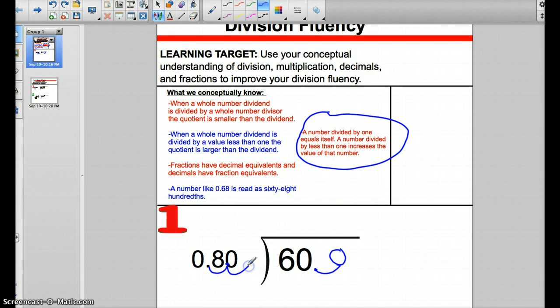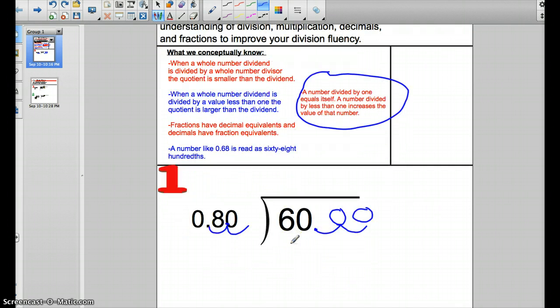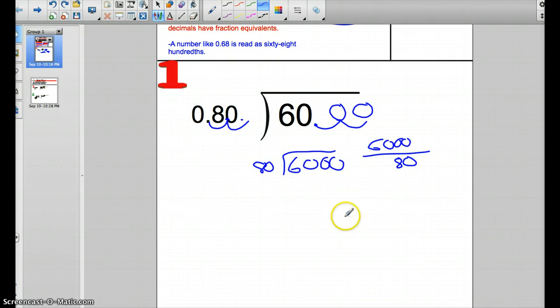I'll move it again. So 8 becomes 80, and 600 becomes 6,000. The reason I didn't put a zero here is because that's where the decimal goes now. So we have 6,000 divided by 80. Now I've got two values that are speaking the same language, and I can solve this like I would traditionally with a division problem.